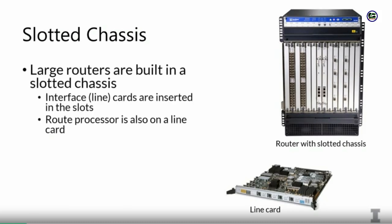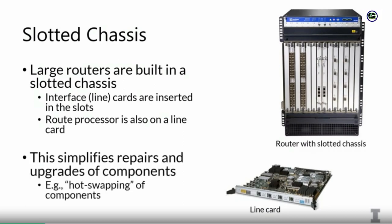Each of these line cards has a different function. Some of the line cards have ports where you can plug in cables. There are also line cards where you have the route processor — the route processor is also on a line card. Generally you have different line cards with different purposes and you can remove or add them as needed. They're hot swappable, so you can leave the router on while you remove line cards without taking down the rest of the router.